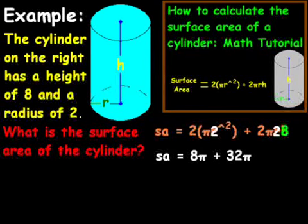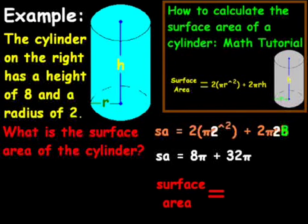Or we can do 2 times 8, which is 16, times 2, which is 32. So that's going to be 32π. So our surface area is going to equal 8π plus 32π. And if we simplify that down even further, surface area is going to equal 40π.